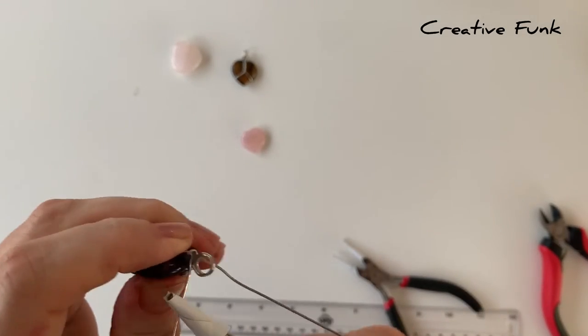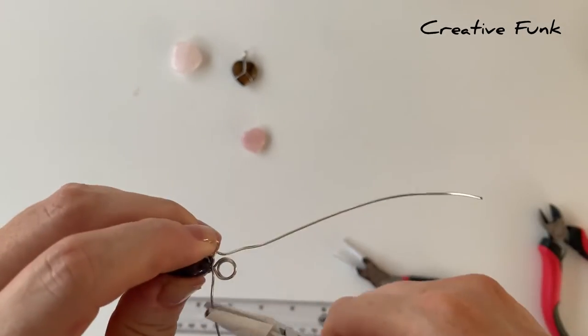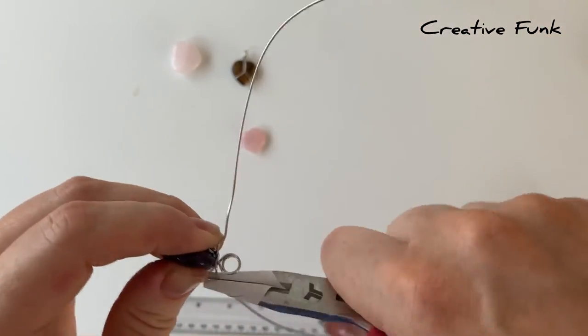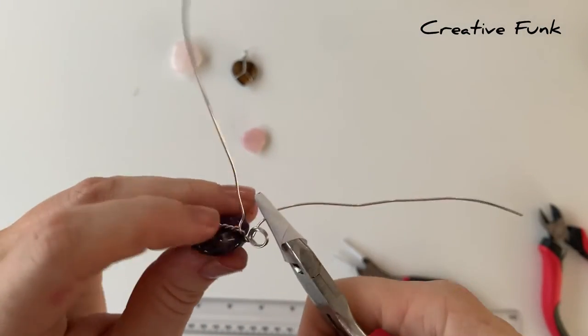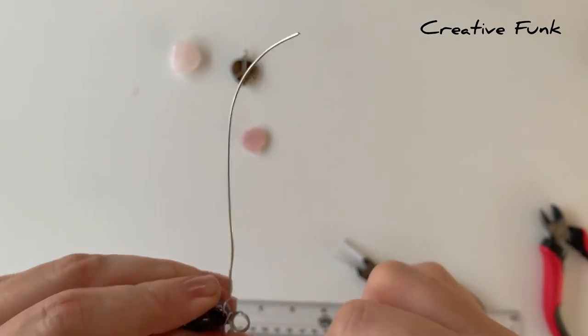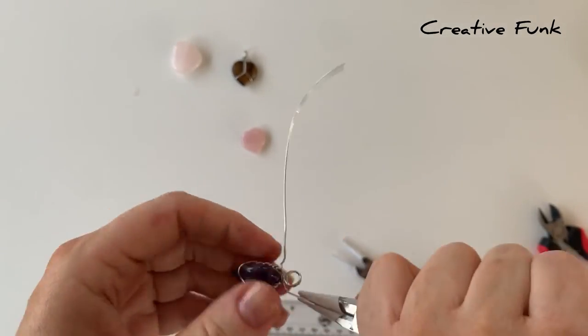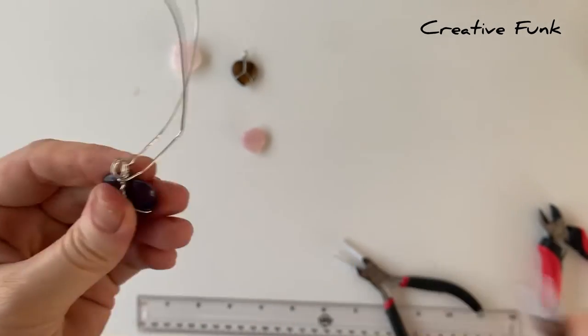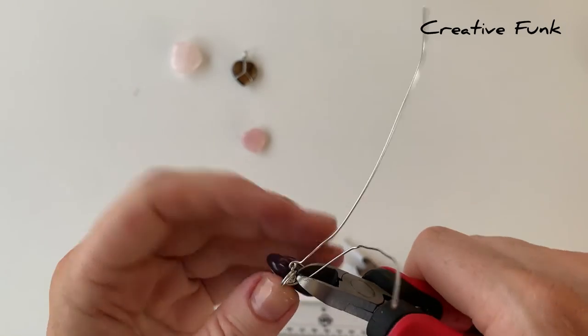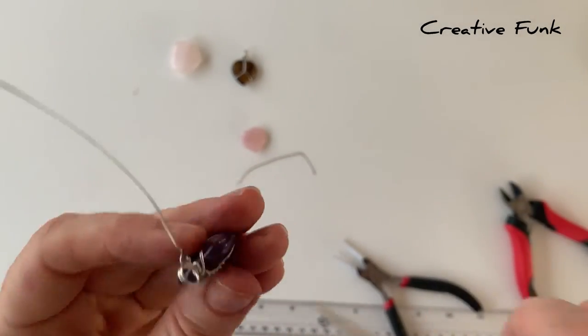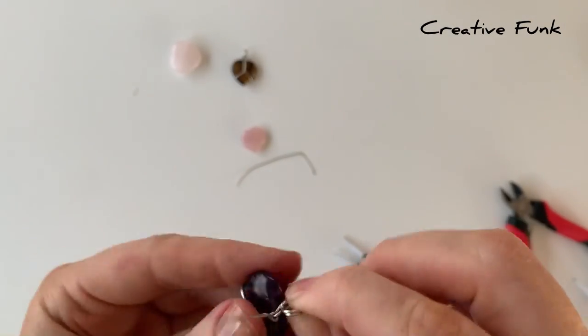Then we just grab each piece of wire. I'll just hold that one out of the way and just starting with one of the pieces of wire, we're just going to slowly wrap that around the bottom of the bail just a couple of times to secure it in place. Then just snipping that tail off, crimping the end down nice and tight.